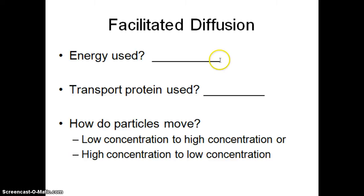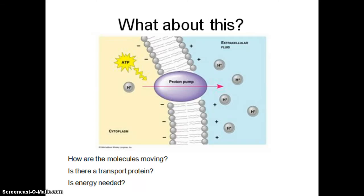In facilitated diffusion, energy is not used, a transport protein is used, and it's going from high concentration to low concentration. Now looking at the next example: the molecules are moving from a low concentration to a high concentration. There is a protein being used — this is a proton pump that's a plasma membrane protein, here are our phospholipids. Is energy being used? Yes, it is. So we know that this must be active transport, because we're going from low to high, energy is being used, and we're using a transport protein.